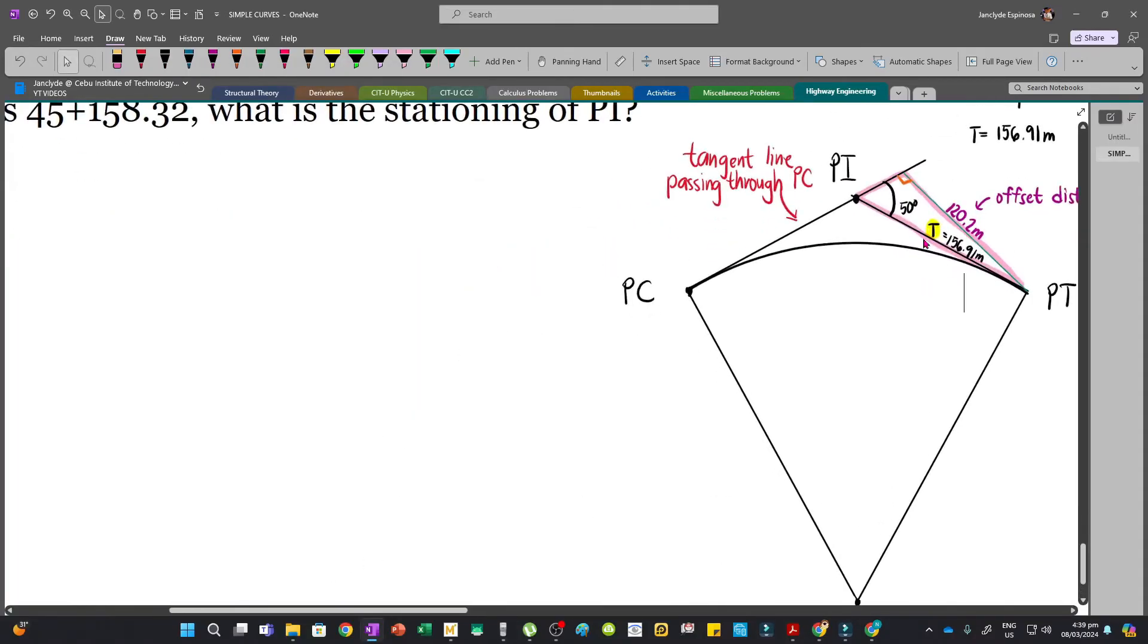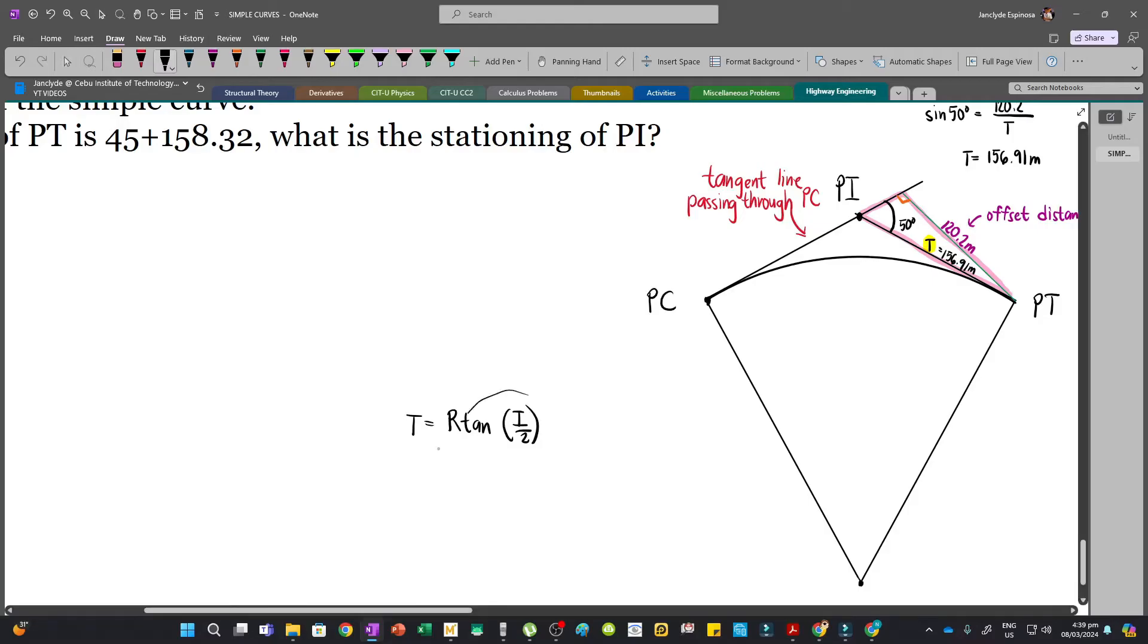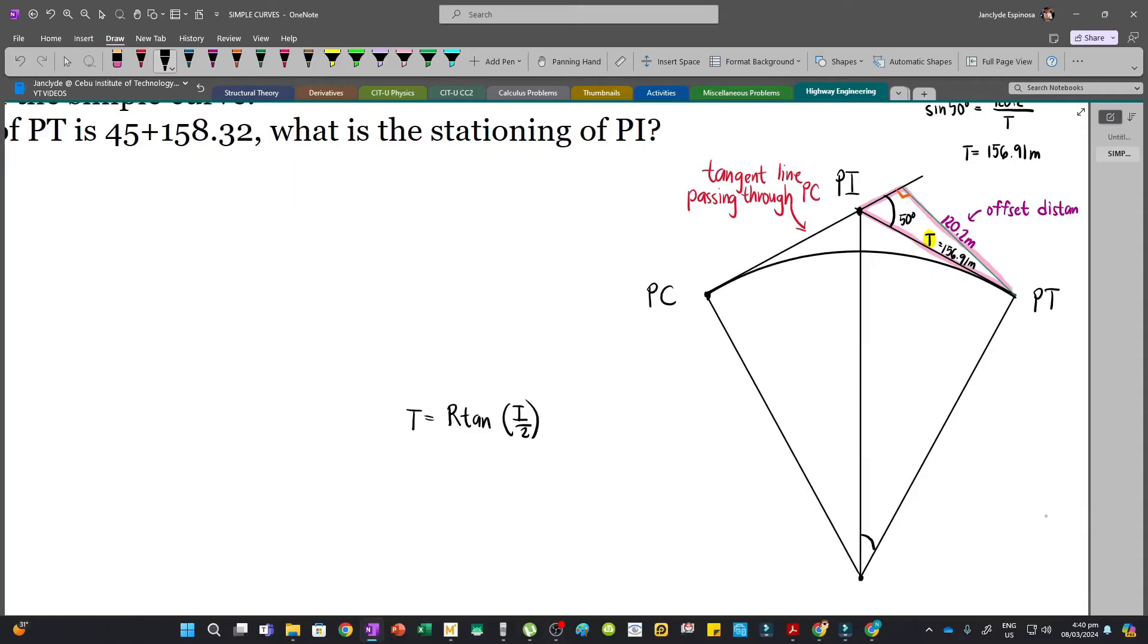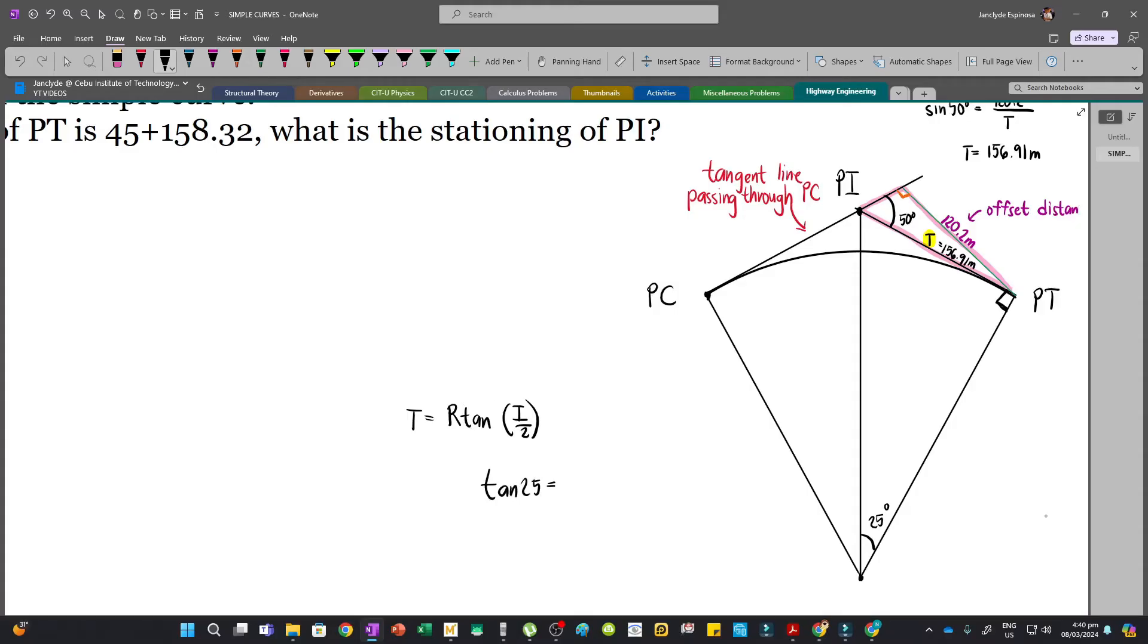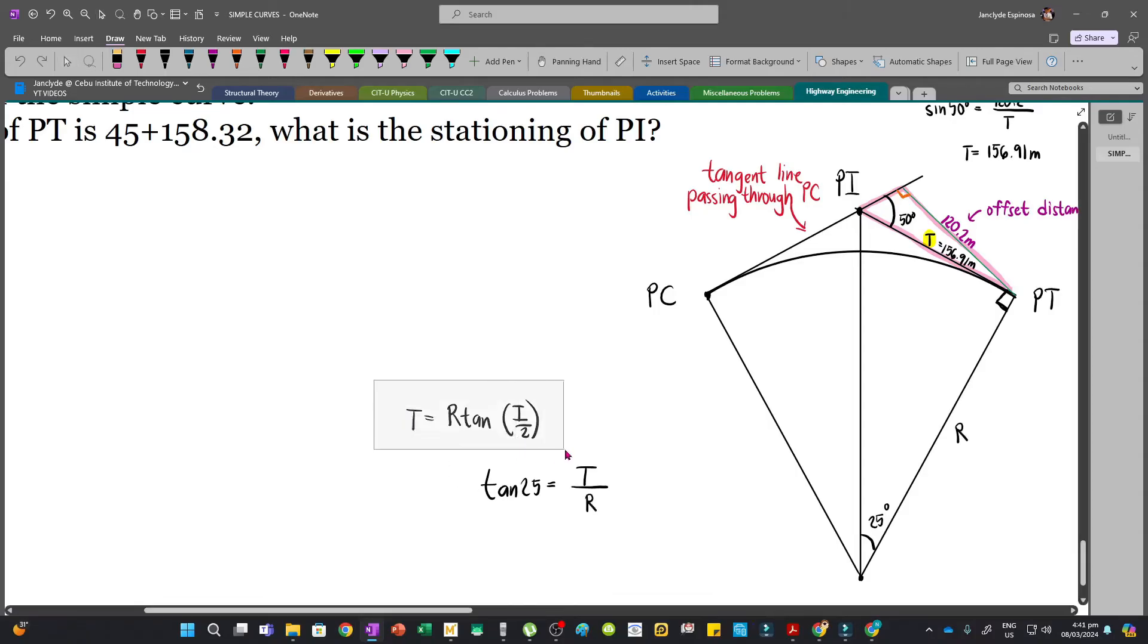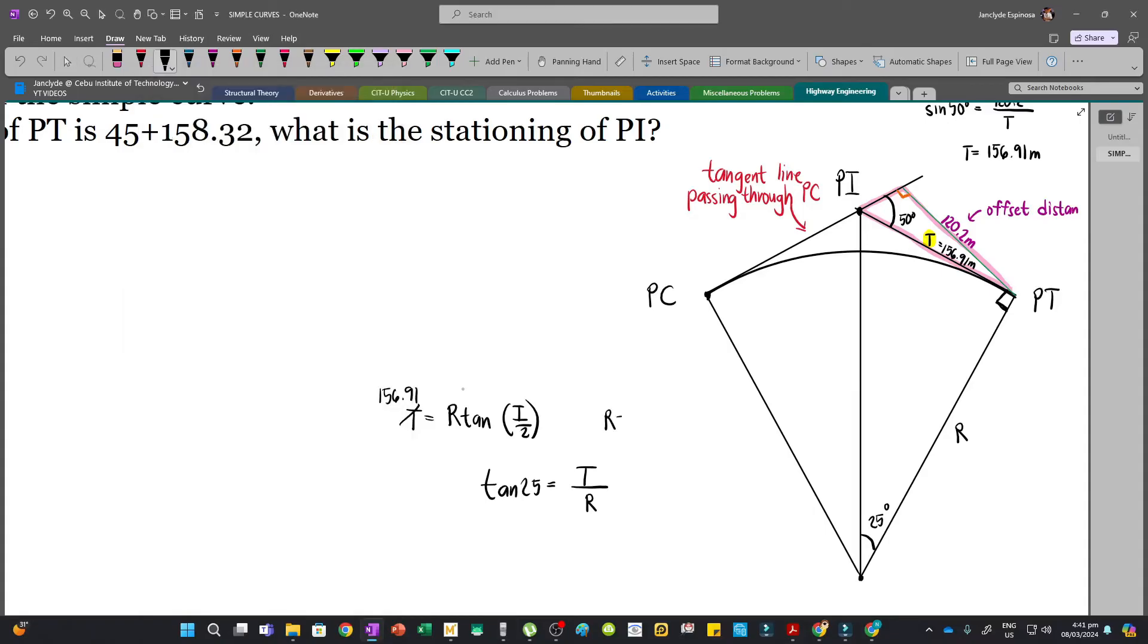So we can now solve for the radius since we already have T. The formula is T equals R tan of I over 2. This is a derived formula, but if you don't want to memorize this, just draw the figure. This is a dividing line and then this angle will be half of 50, so this is 25 degrees, and then this is perpendicular. That's why we are using the tangent function. Tan 25 is equal to the opposite side, which is T, divided by the adjacent side, which is our radius. So our T is 156.91 equals R multiplied by tangent of I over 2, so 50 divided by 2. Our radius will be 336.49m. This is our answer for letter A.